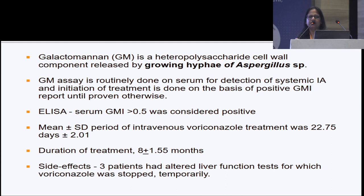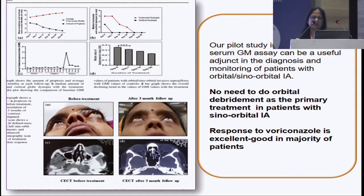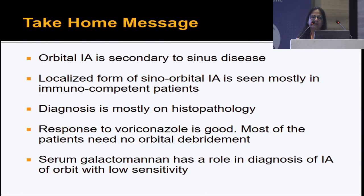Galactomannan — a heteropolysaccharide cell wall component released by growing Aspergillus hyphae — should be used to decide when to stop or restart treatment. Average treatment duration in this study was 8 months. Liver function must be monitored; monitoring serum voriconazole levels is also advisable. Take-home message: voriconazole works very well; exentration is not needed as it causes functional damage. Serum galactomannan should be done routinely in all these patients.